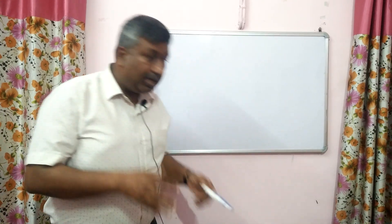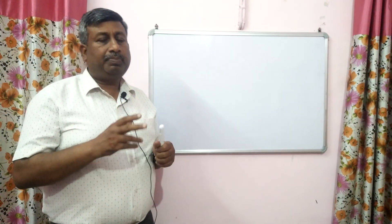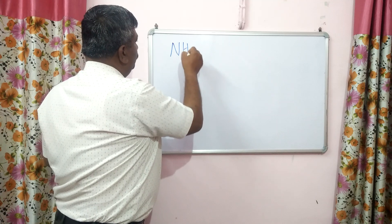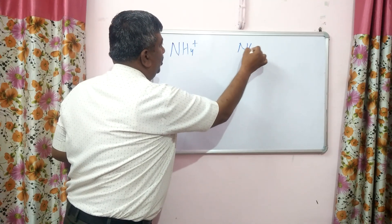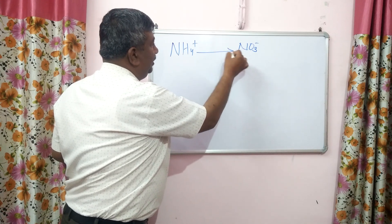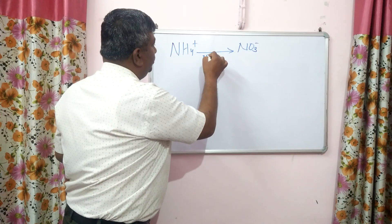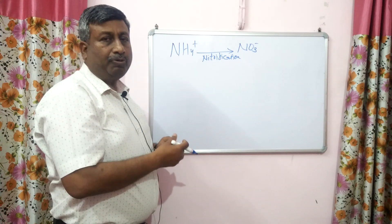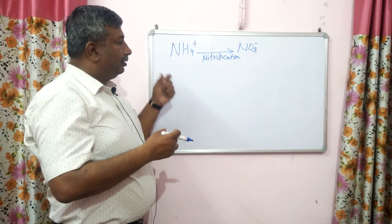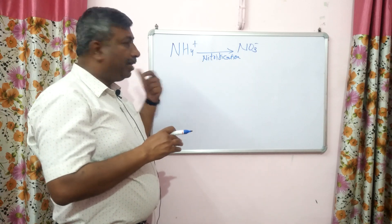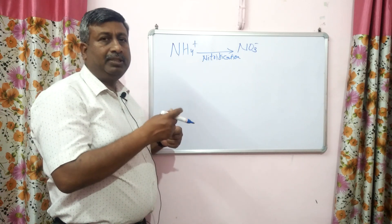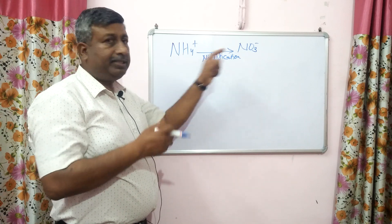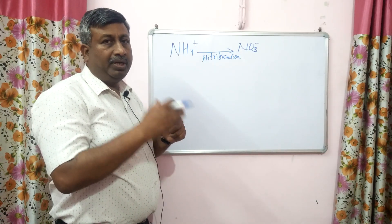Before we discuss the loss processes, ammonium is converted into nitrate by the process of nitrification. This nitrification process is mediated by microbes — Nitrobacter and Nitrosomonas. When we apply ammonium-containing fertilizer, or ammonium is present through mineralization or decomposition, then ammonium is naturally converted into nitrate by these microbes.